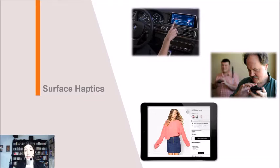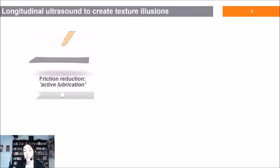As we know, ultrasonic surface haptic devices allow us to create the illusion of a textured surface by modulating friction using ultrasonic vibration. This has many applications. Longitudinal vibrations can be used for this purpose.